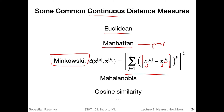The Euclidean distance is the special case of Minkowski where p equals two. With p equals two, we have squared terms and a one-over-two exponent, which is the square root. So in the Euclidean distance, we compute the squared difference between two feature values for each dimension, sum them up, and then take the square root to restore the original unit. That is how the Euclidean and Manhattan distances are related.